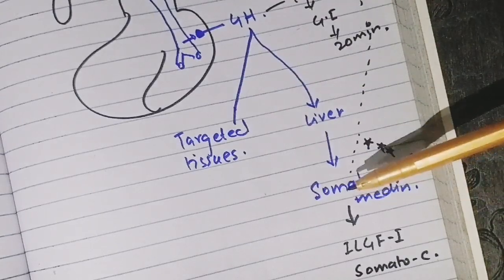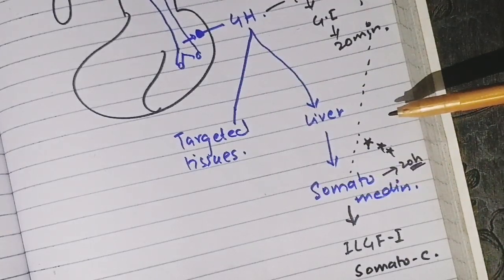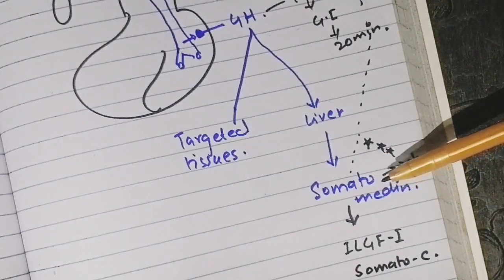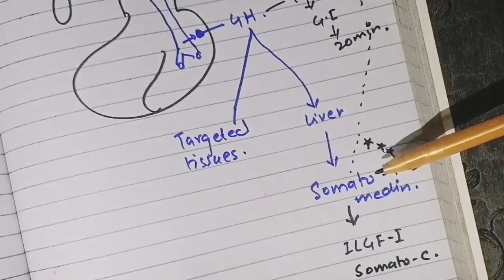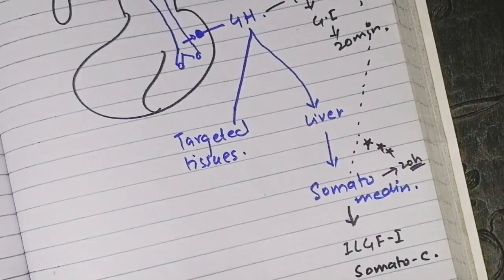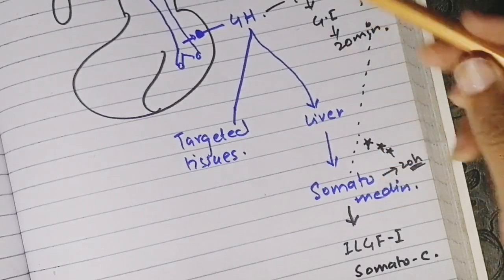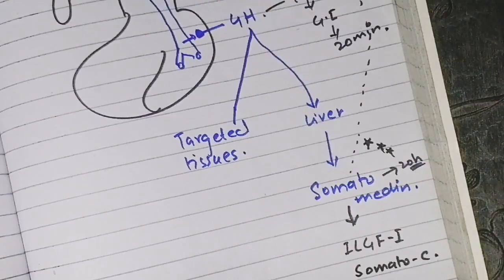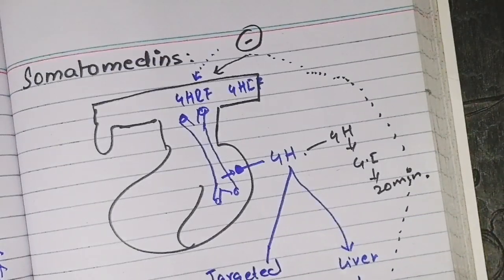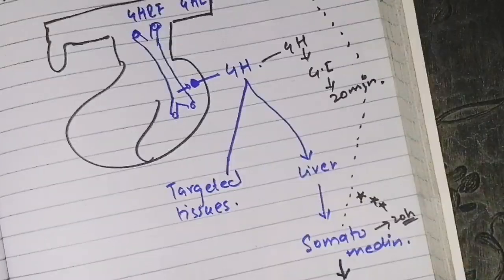In addition, because somatomedins have a long half-life in general circulation, we can use somatomedins to find out the growth hormone concentration. Somatomedins inhibit growth hormone releasing factor, so we can say that somatomedins are controlling growth hormone secretion.